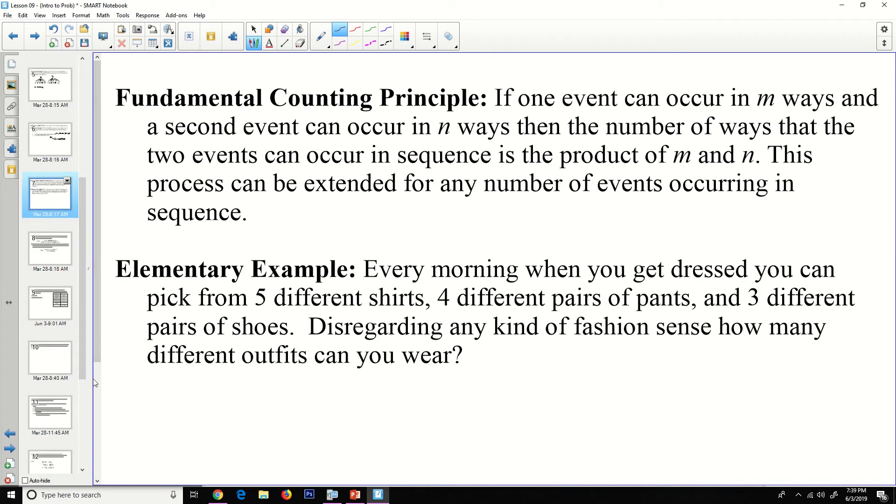Fundamental counting principle: if one event can occur in M ways and a second event can occur in N ways, the number of ways that the two events can occur in a sequence is the product of M and N. This process can be extended to any number of events occurring in sequence. So here's an elementary example. Every morning when you get dressed, you can pick from five different shirts, four different pairs of pants, and three different pairs of shoes. Discarding any kind of fashion sense, how many different outfits can you wear? Well, we are extending this into any number of events. In this particular case, three events. The first event, there are five outcomes. The second event, there are four outcomes. The third event, there are three outcomes. Five times four is 20. 20 times three is 60 different outfits.